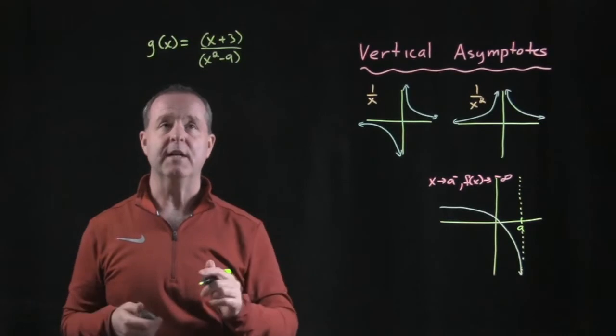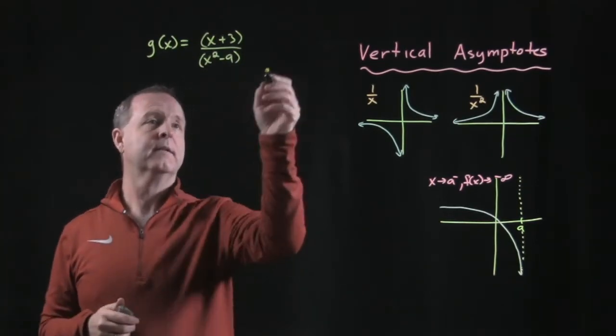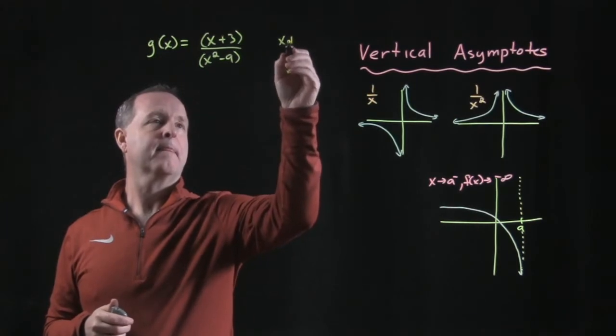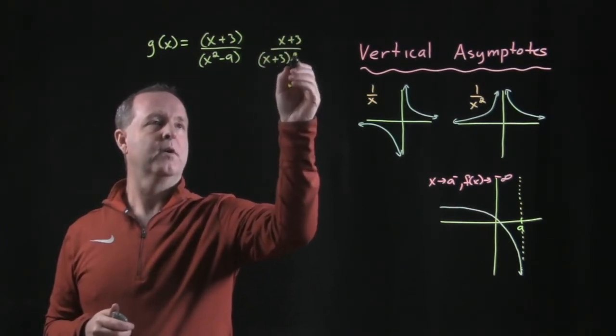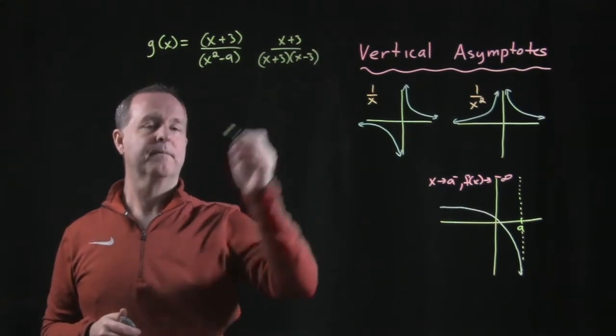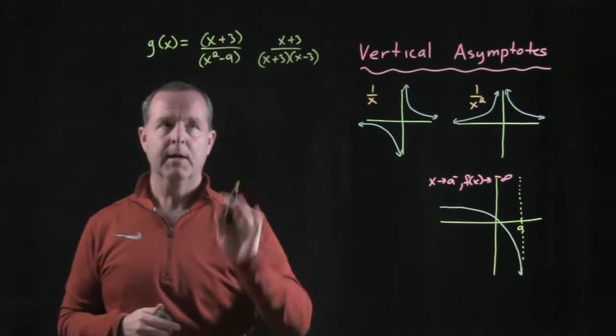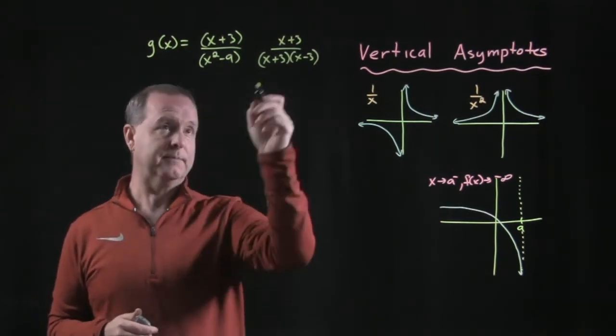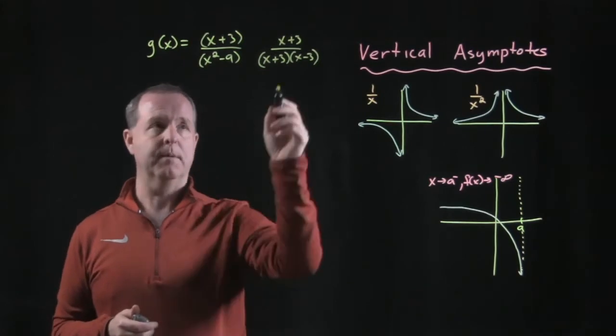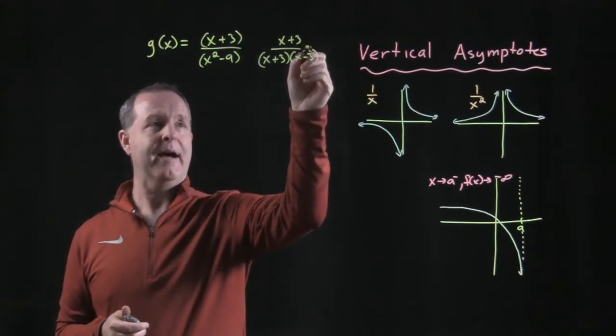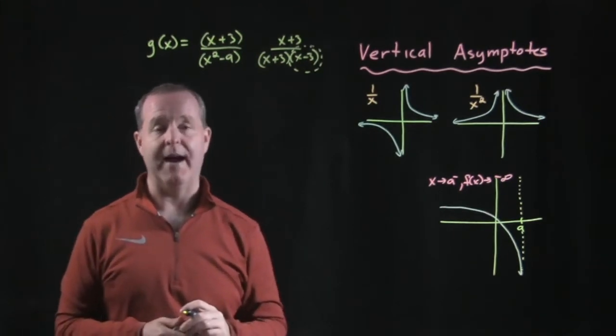Another example, I have some function g of x. So we want to find out first, are there any common factors? In order to do that, let's factor it out. I do see a common factor, the x plus 3. So that tells me that negative 3 is not a vertical asymptote. The only vertical asymptote I have is this one right here, because it's not sharing a common factor with the numerator.